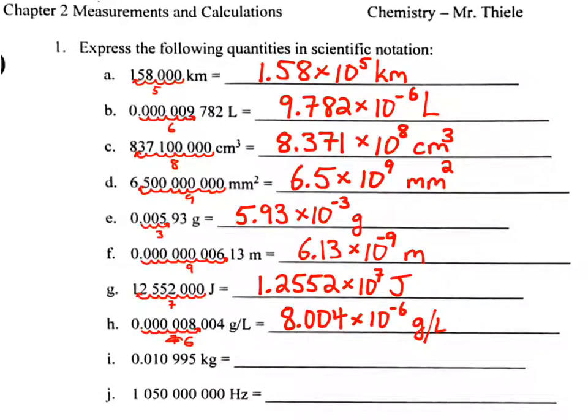Okay, next we have 0.010995. That number has five significant digits, smaller than one, so we will be moving the decimal place to the right, two places. So we have 1.0995 times 10 to the negative two kilograms.